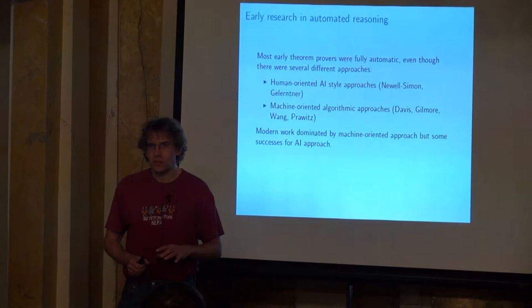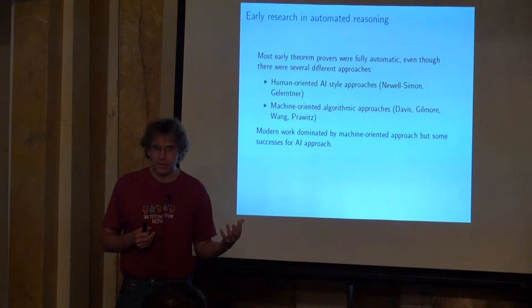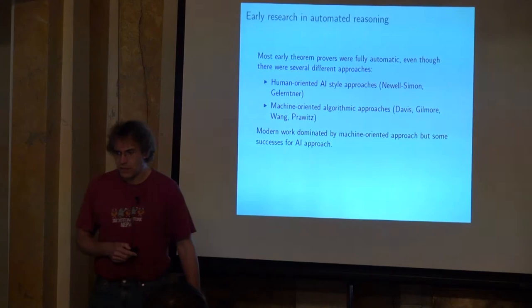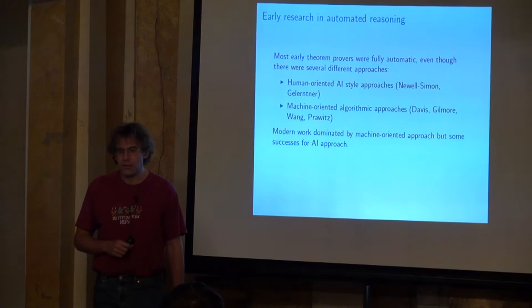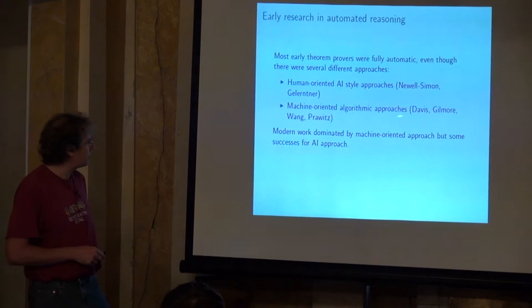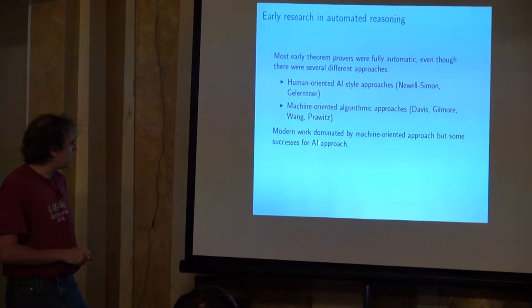You can distinguish two general approaches. Some people had what you might call the artificial intelligence approach — AI here means artificial intelligence — where you try to understand how humans think and replicate that inside the computer. Early people in this area included Newell, Simon, and Galantner. Then there were the more machine-oriented algorithmic approaches, starting with several people also in the 1950s like Davis, Gilmore, Wang, and Prowitz.